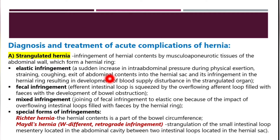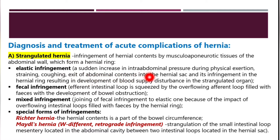Strangulated hernia is the infringement of hernia contents by the musculoaponeurotic tissues of the abdominal wall which forms the hernia ring. There are three main types: elastic infringement, which is a sudden increase in intra-abdominal pressure during physical exertion, straining, or coughing causing exit of abdominal contents into the hernia sac and infringement in the hernia ring, resulting in disturbance of blood supply to the strangulated organ. Fecal infringement occurs when the efferent loop is squeezed by the overflowing afferent loop filled with feces, with developing bowel obstruction.